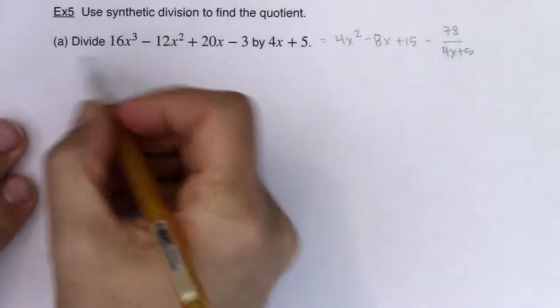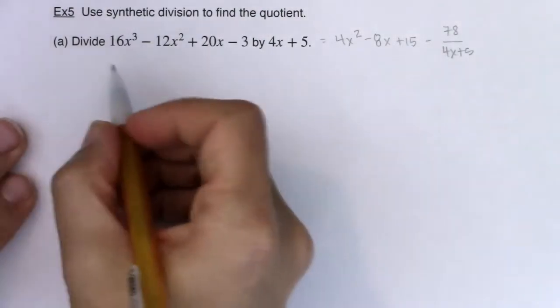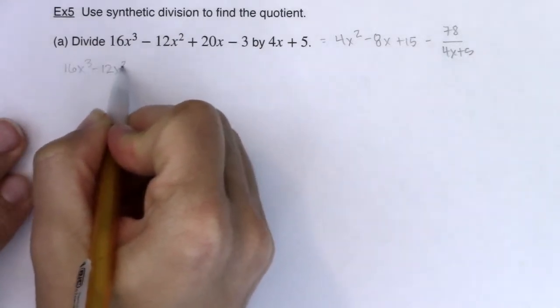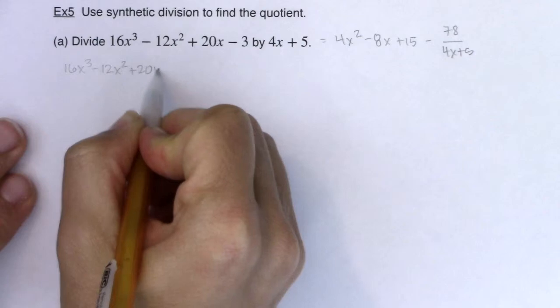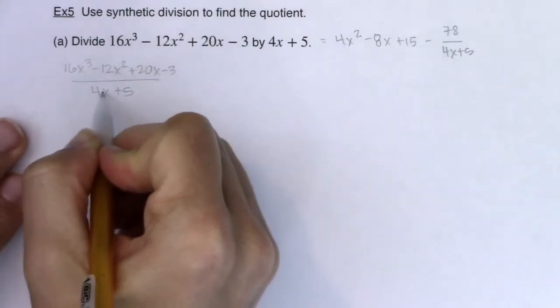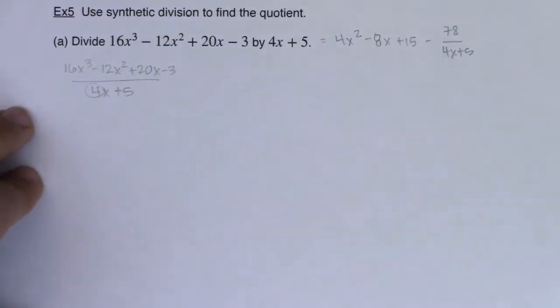All right, so let's go ahead and set this up. If I wanted to take a look at this, this would be the quotient 16x cubed minus 12x squared plus 20x minus 3 in ratio to 4x plus 5. But we run into a problem because we have a divisor, the binomial in our denominator does not have a coefficient of 1.